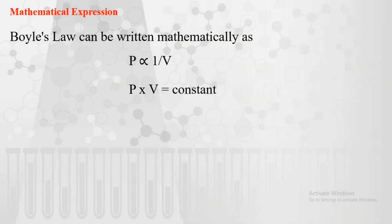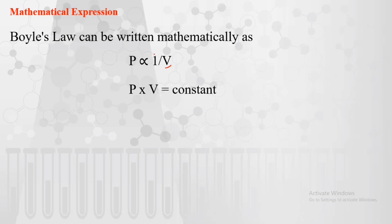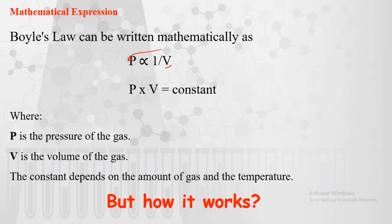Mathematically, Boyle's Law can be written as: pressure is inversely proportional to volume. This means that P multiplied by V is equal to a constant, where P is the pressure of the gas, V is the volume of the gas, and it depends on the amount of gas at constant temperature.